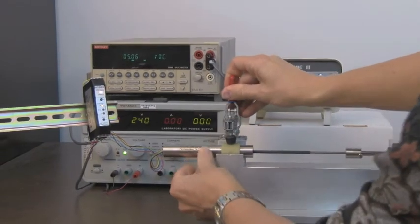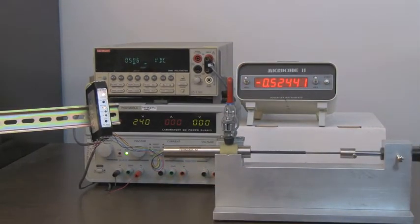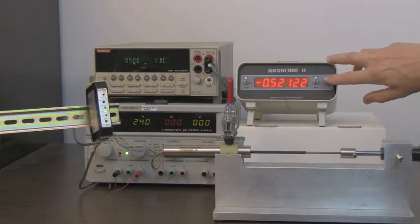Next, we adjust the digital micrometer head until the null LED indicator lamp is steadily illuminated. Being at null, we now reset the digital micrometer readout to zero.